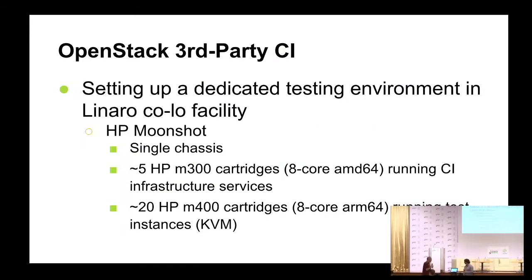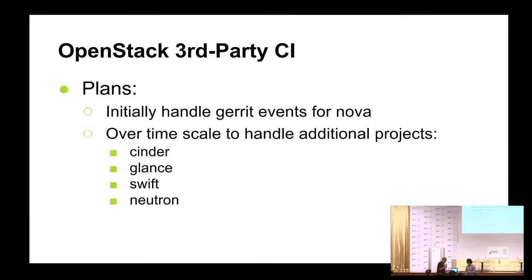As far as how we're going to set it up, we're going to set up a dedicated environment in the Linaro Colo facility in Austin. Initially, it's going to be set up using an HP Moonshot because that's the hardware we have — a single chassis, starting out with about five M300 cartridges, which are HP's AMD64 cartridges, and then about 20 M400s, which are the McDivitts I brought to the last Connect — eight-core ARM64. Those will actually run all the tests. We can't initially handle the volume of commits that come through OpenStack daily, so we're going to limit it initially to just running against commits to Nova, and then scale over time to handle other projects, eventually running against all commits if we have the hardware.